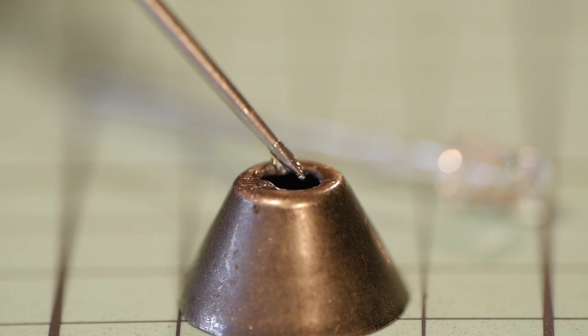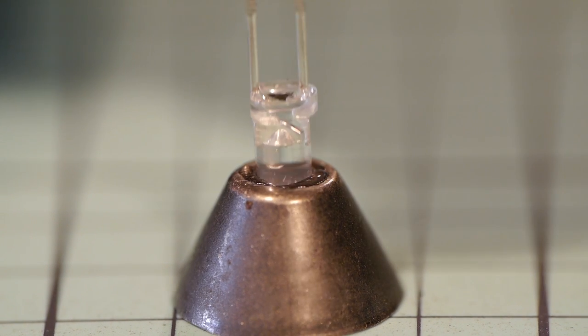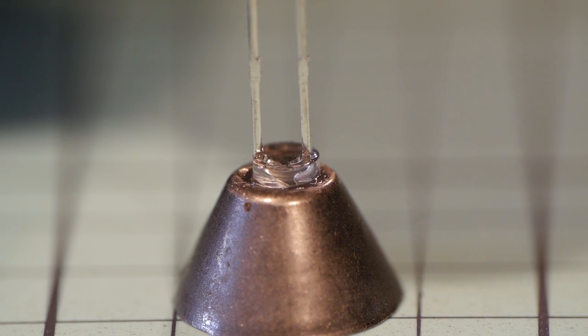Now it's just a matter of gluing the LED into the shade and I've found super glue gel to work well when gluing plastic and metal together.